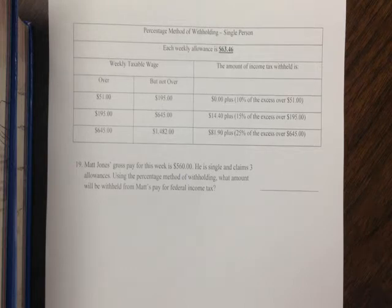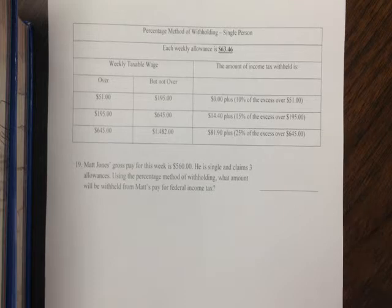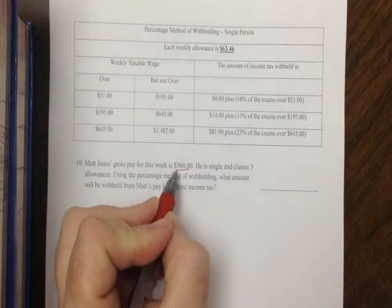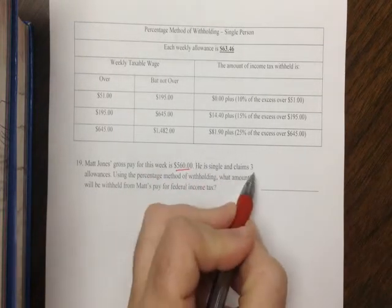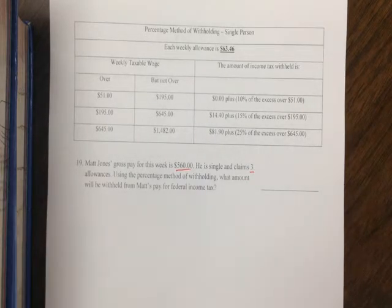For this one, it is the weekly chart. Reading the question: Matt Jones' gross pay for this week is $560. He is single and claims three allowances. Using the percentage method, what amount will be withheld from his federal income tax?